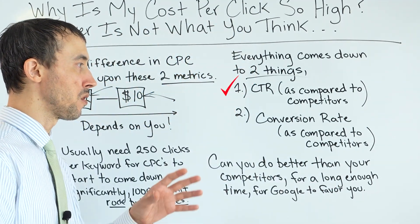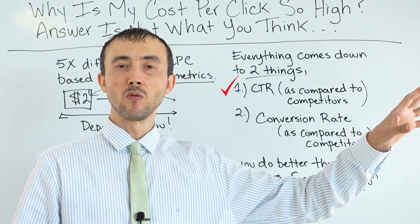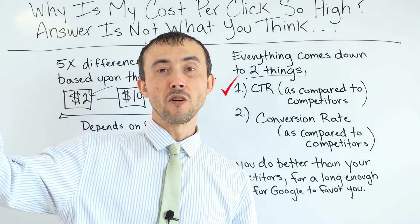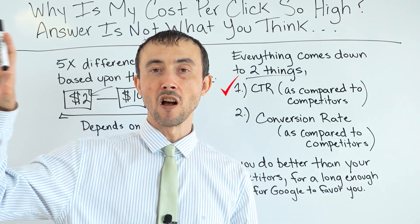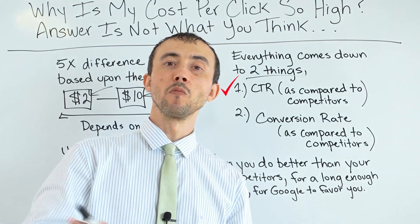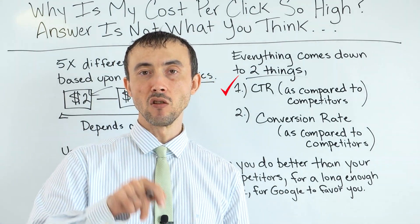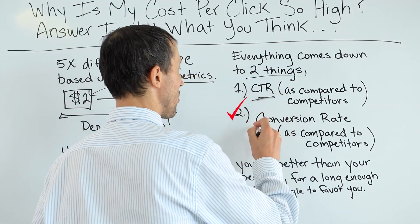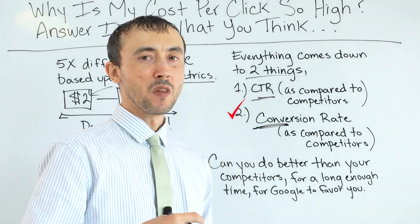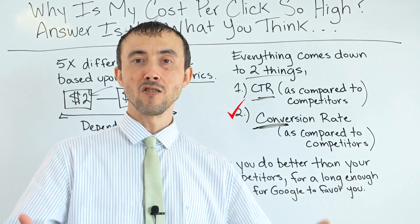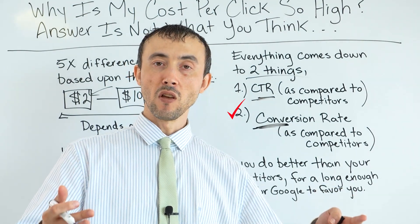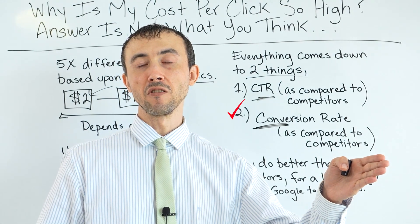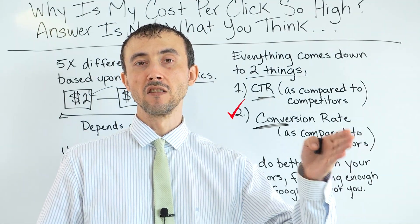Whether you end up on the side of the sucker who paid a bunch of money to Google and got nothing, or the other side where you're making millions of dollars a year really comes down to your efforts and decision to do what I'm telling you here — so that compared to your competitors, your click-through rate is better and your conversion rate is better. A good click-through rate or conversion rate is simply something better than your leading competition who has been running ads regularly for the last three years on Google.